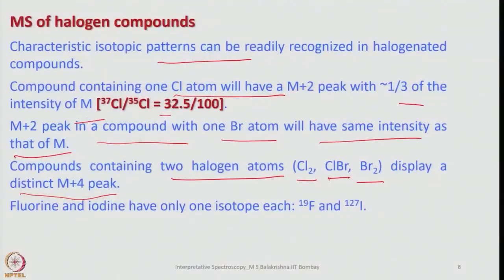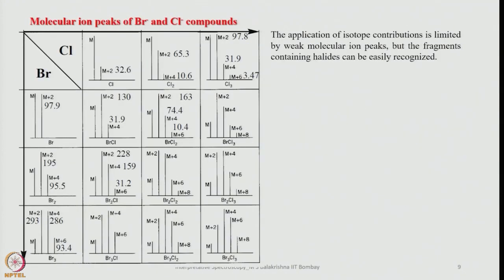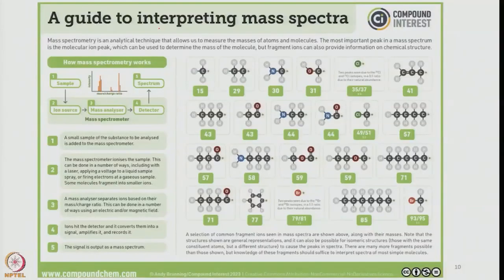From the isotopic patterns we can immediately tell whether halogens are present in the molecule. If we have fluorine or iodine instead of chlorine or bromine, they have only one isotope: ¹⁹F is 100% abundant and ¹²⁷I is 100% abundant. The chart I've provided shows molecular ion peak patterns for bromide and chloride compounds across combinations such as Cl, Cl₂, Cl₃, Br, BrCl, BrCl₂, BrCl₃, Br₂, Br₂Cl, Br₂Cl₂, Br₂Cl₃, Br₃, and Br₃Cl — a very useful guide for interpreting mass spectra.